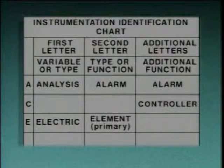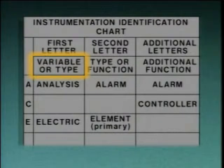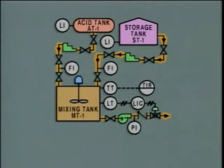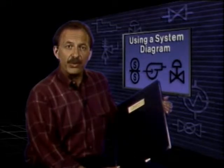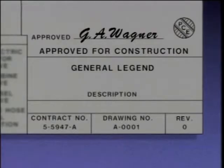This is the diagram we'll be working with. We'll start at acid tank AT1. There is only one instrument symbol shown for the acid tank. The symbol containing the letters LI represents a locally mounted level indicator that shows how much acid there is in the tank. Storage tank ST1 also has a local level indicator. The symbols for equipment and instruments on a P&ID are connected by lines, but the lines aren't all the same. Solid lines typically represent process piping or instrument connections to the process. Lines with slashes usually represent pneumatic signal lines, and dashed lines typically represent electrical signal lines.